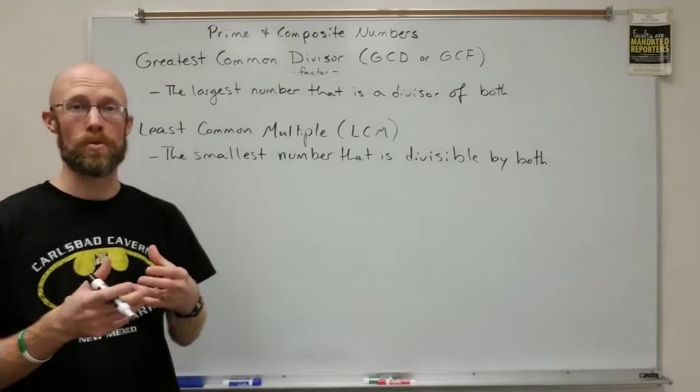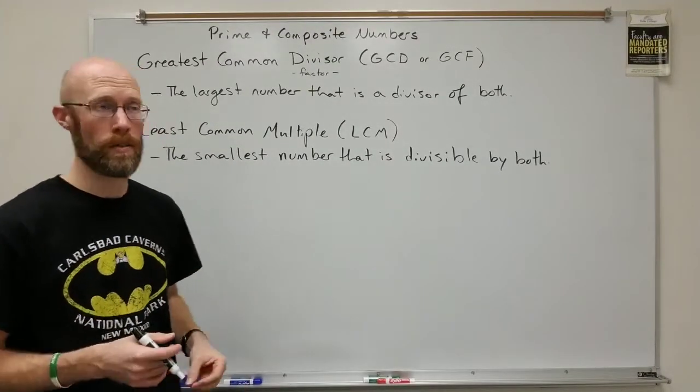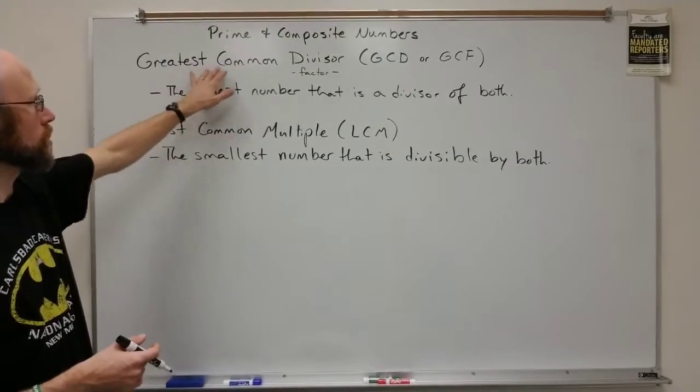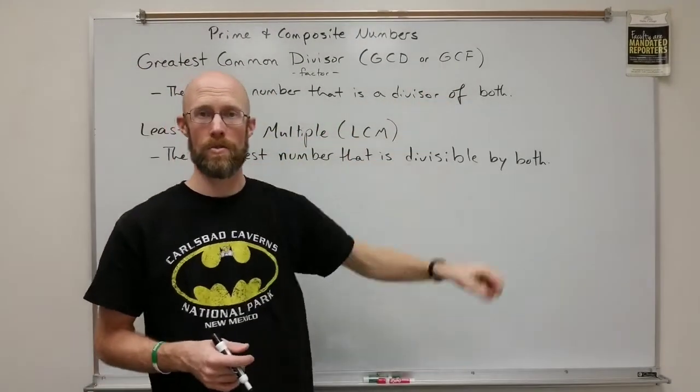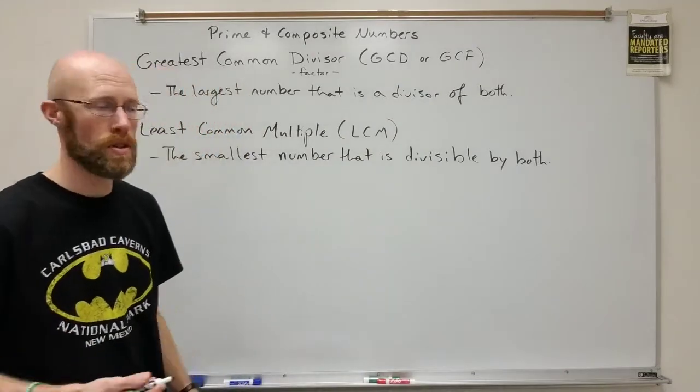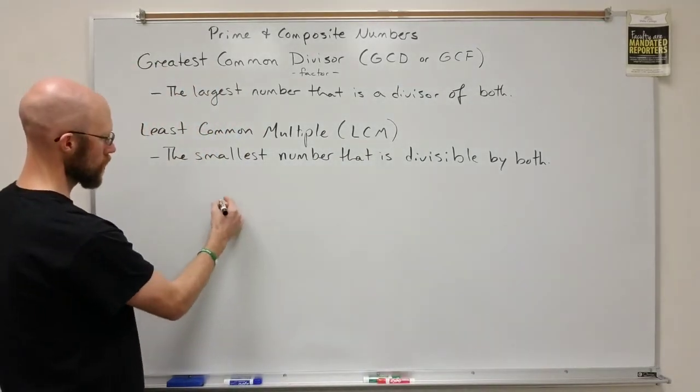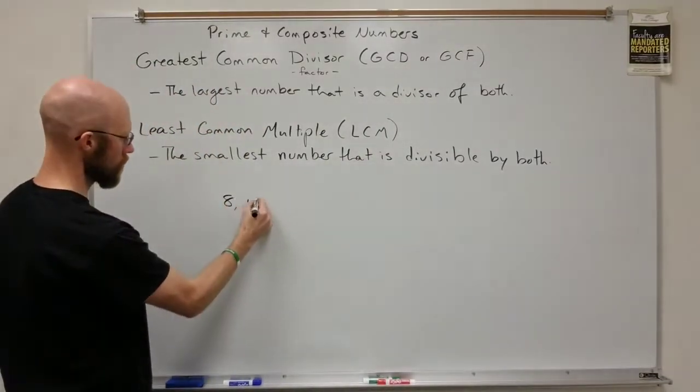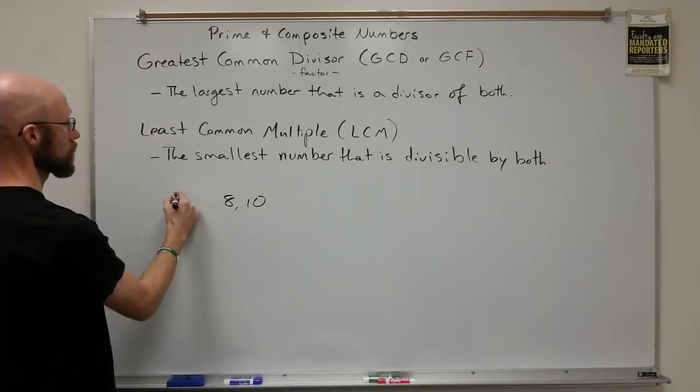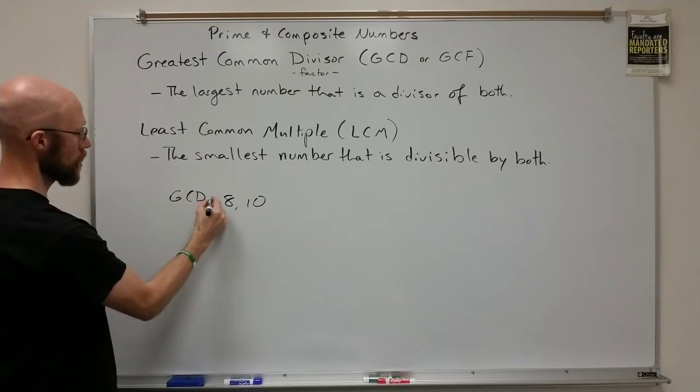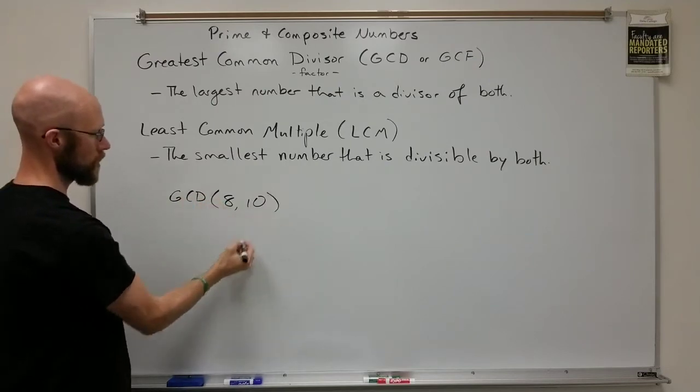Essentially, if you have two natural numbers or more, you get three or four, whatever, the GCD is the largest number that's a divisor of both. So for instance, if you had the numbers 8 and 10, the largest number that's a divisor of each is GCD of 8 and 10.